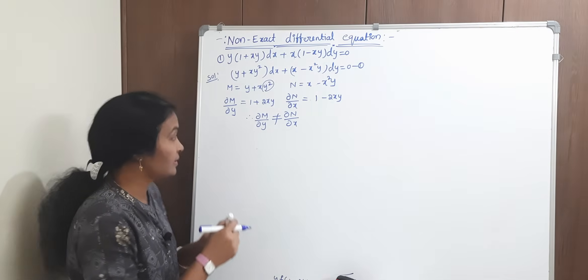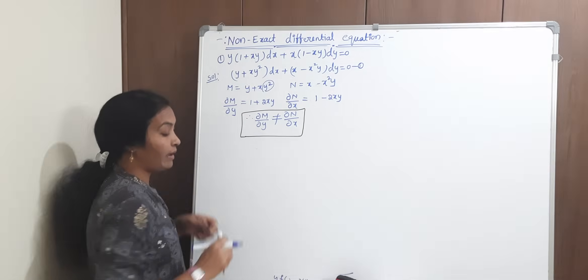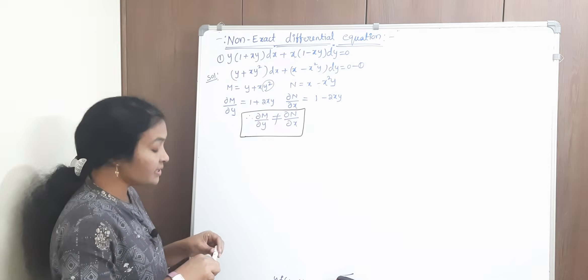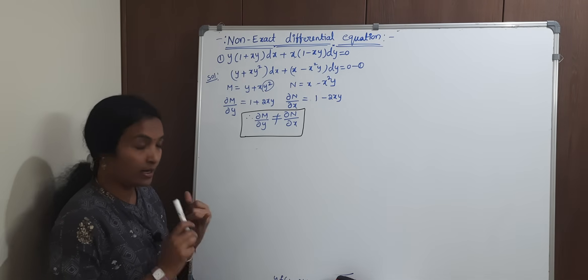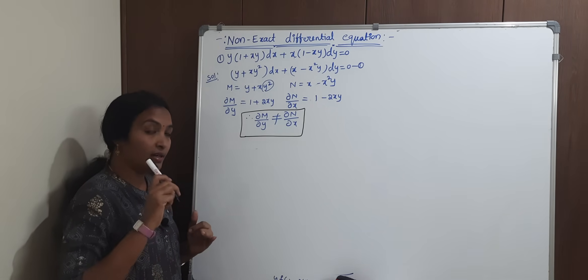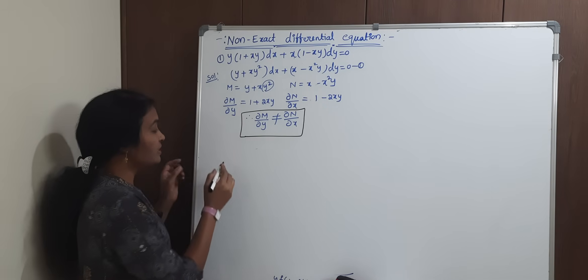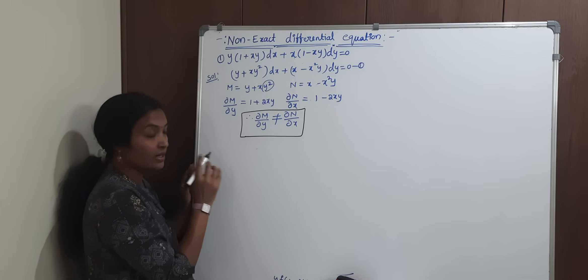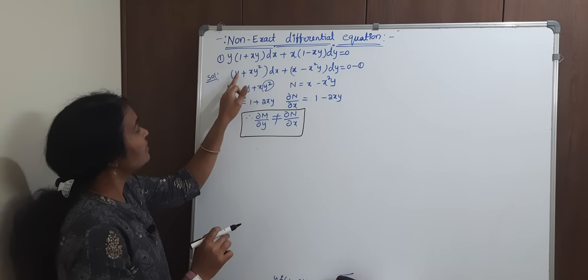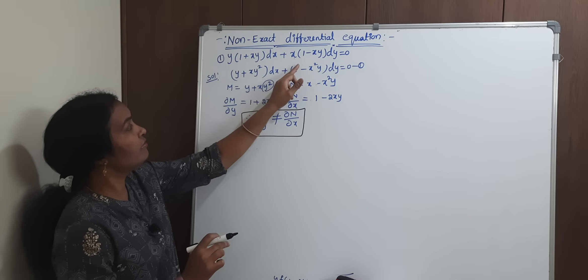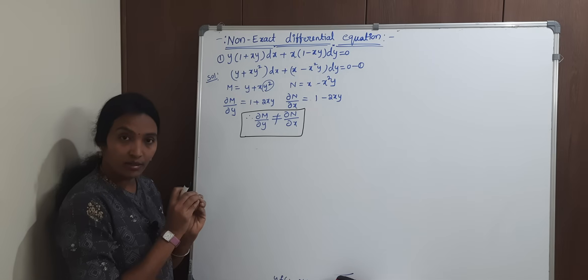Since the equation is not exact, we need to find the integrating factor. The first method is by inspection — the direct formula is not applicable. Next, check if the equation is homogeneous. The powers are unequal: the terms have powers 1, 2, 1, 3, etc. Since the powers are unequal, the equation is not homogeneous, so the first integrating factor 1 by mx plus ny is not required.